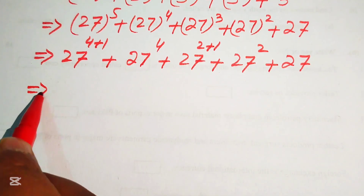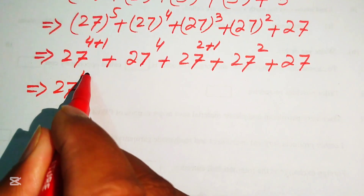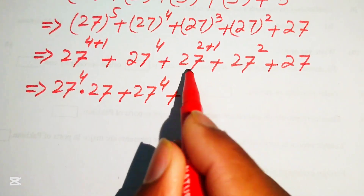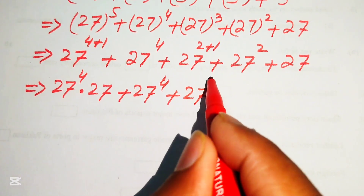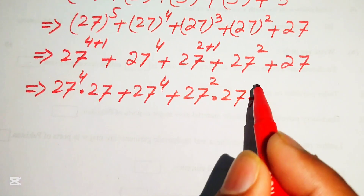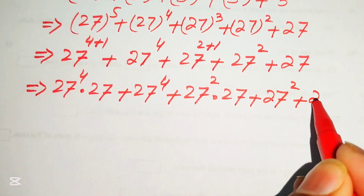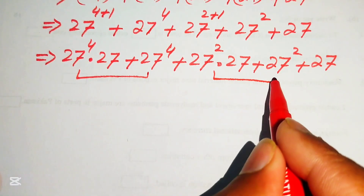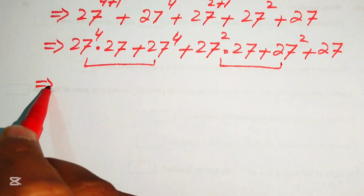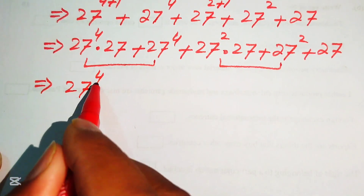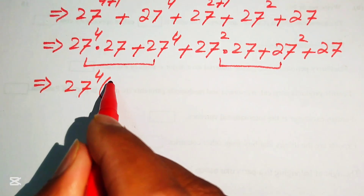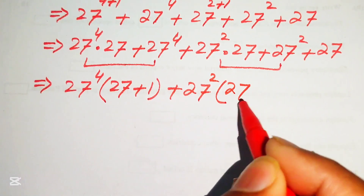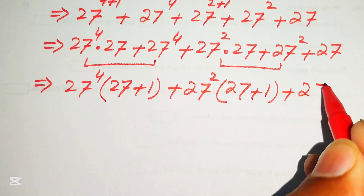Now we apply another exponent law and break the exponents, writing the expression as 27 to the power of 4 times 27, plus 27 to the power of 4, plus 27 squared times 27, plus 27 squared, plus 27. Now we take 27 to the power of 4 common from the first two terms, and 27 squared common from the next two terms, giving 27 to the power of 4 times (27 plus 1) plus 27 squared times (27 plus 1) plus 27.